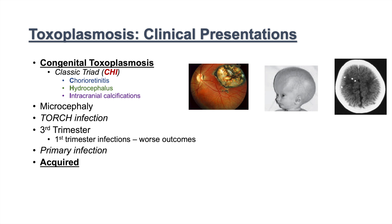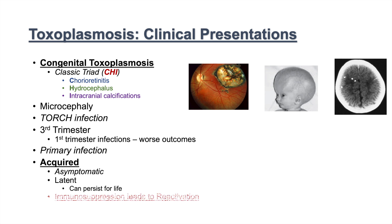This is all in contrast to acquired toxoplasmosis. Acquired toxoplasmosis is generally asymptomatic. It can be latent — basically in a suppressed form with no symptoms — but the person is still infected with toxoplasma. It can persist for the life of the person, and generally immunosuppression can lead to reactivation. When a person is severely immunosuppressed, as in AIDS, this can lead to a reactivation of toxoplasma leading to toxoplasmosis.